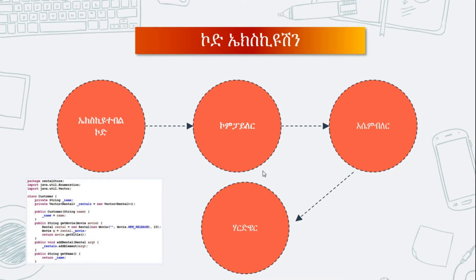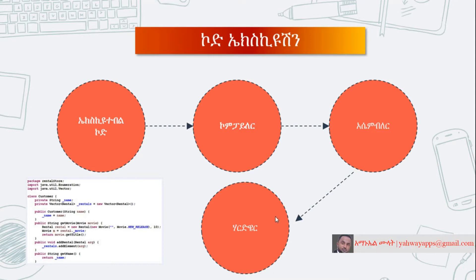The executable code is part of the application. If part of the application is involved, the assembler acts as a computer. The executable code is what the assembler uses — the assembler is the hardware.